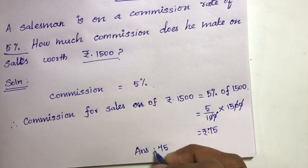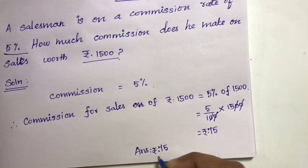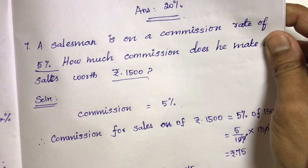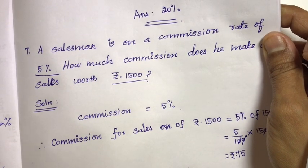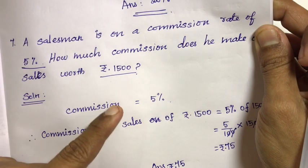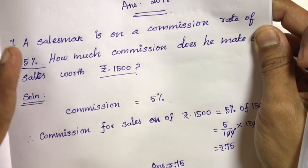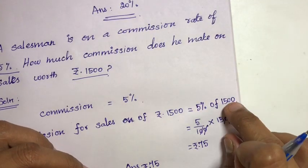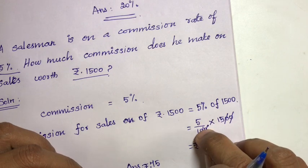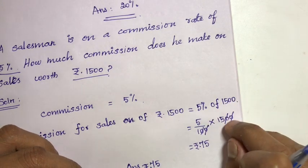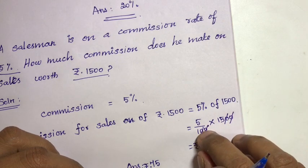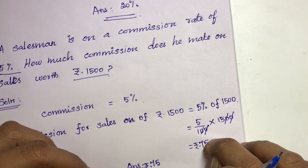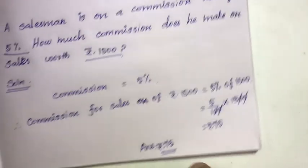5 percentage of 1500 can be written as 5/100 multiplied by 1500. Cancel zeros: 5 times 15 is 75. So the commission is 75 rupees. For 1500 rupees sales, the salesman earns 75 rupees commission at 5%. That is 5% of 1500 — percentage fraction multiplied by 1500, cancel zeros, 5 times 15 is 75. The salesman earns 75 rupees.